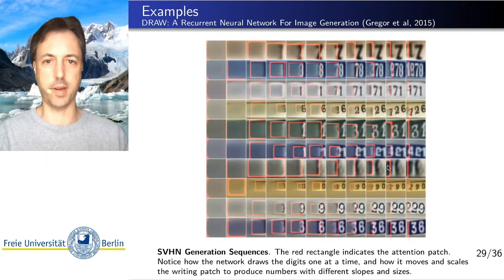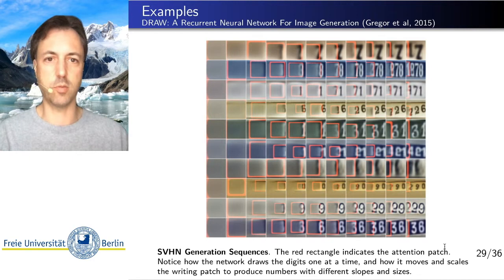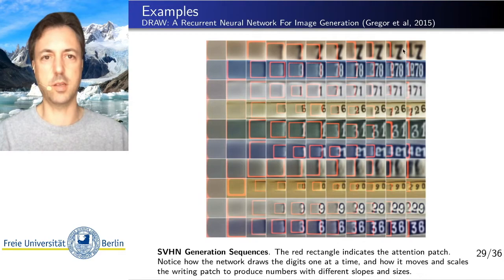And here you see how this network performs in generating these sequences of numbers as you see in scanned numbers of houses that are typically generated here from the right to the left.